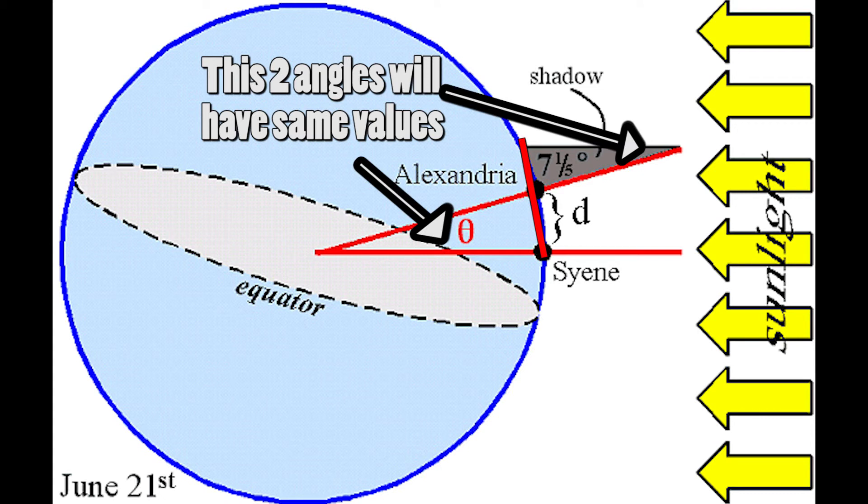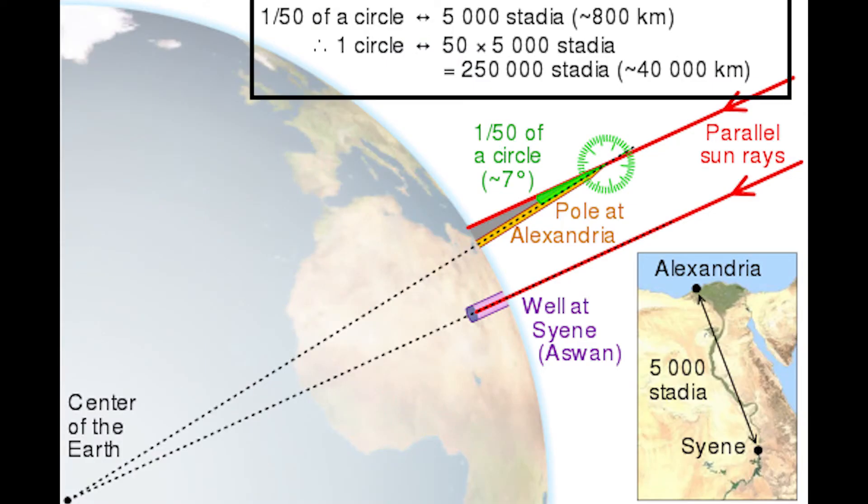So if we know the value of the angle, that means we'll know how much the land is covered by that certain degree of angle. In our case it's 7 degrees. So 7 degrees is covering 5000 stadia according to his experiment.